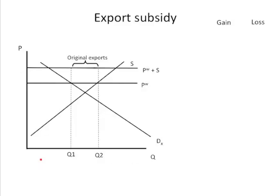Now we're providing a subsidy — every unit sold abroad gets an extra check from the government. To go back to our example, let's say the price is $100 and the government is willing to pay $10 for every unit exported. So every time a domestic firm sells this product abroad, they get $100 from the foreigners plus $10 from the government. That clearly is a benefit to selling this product abroad.